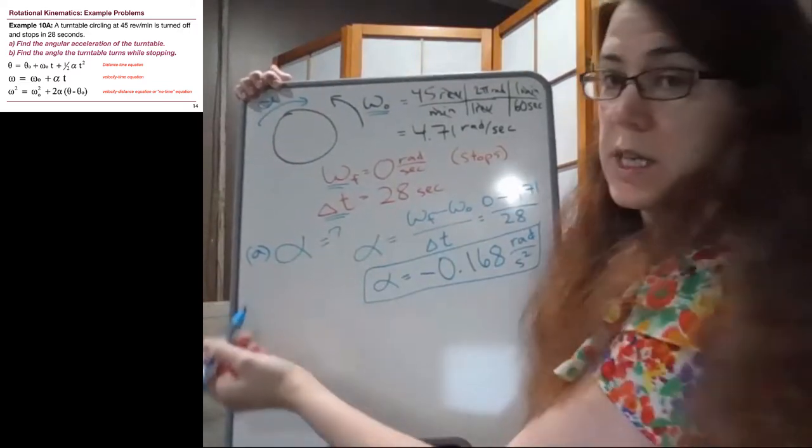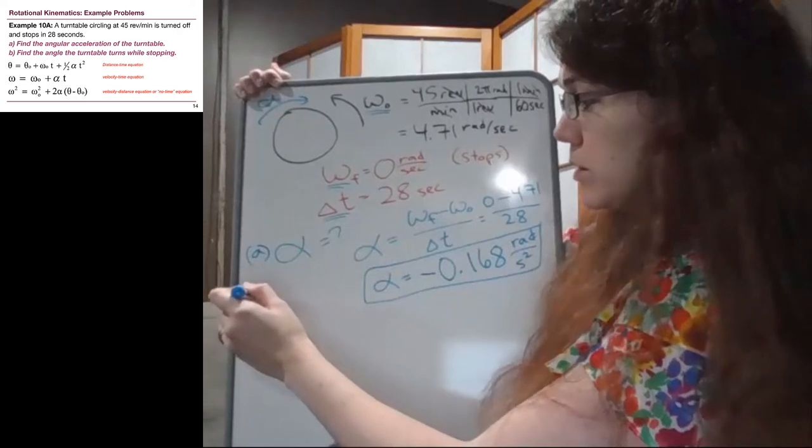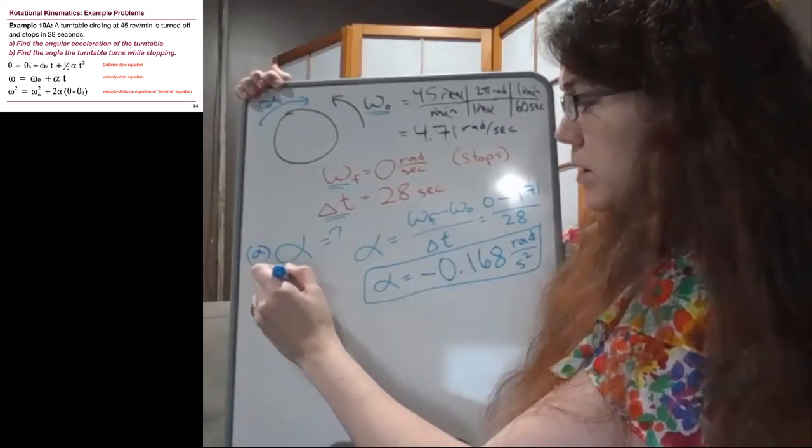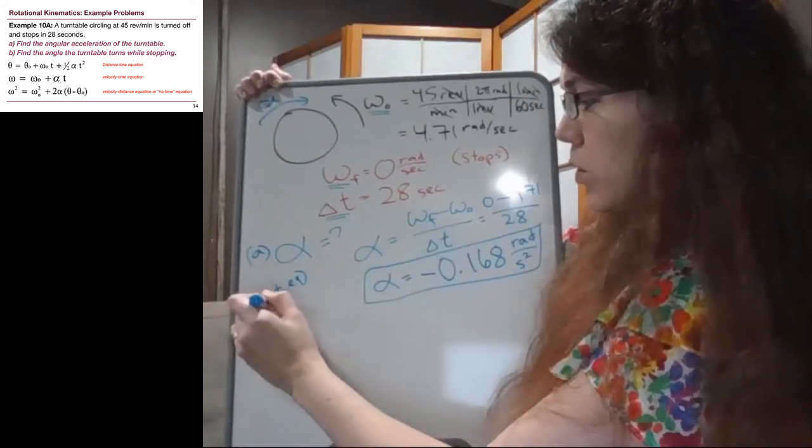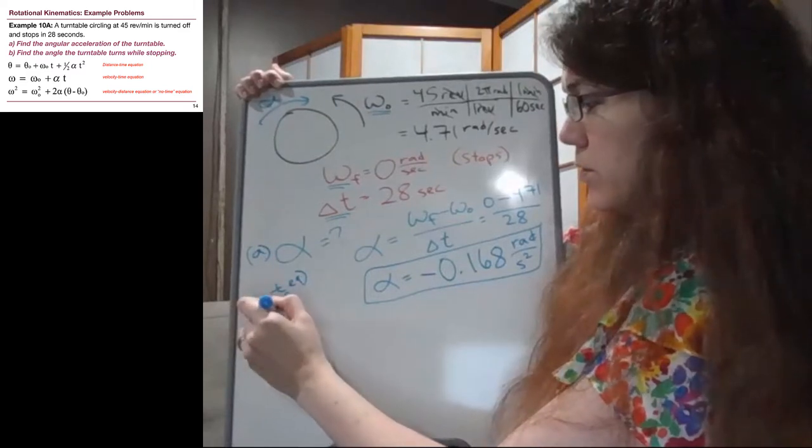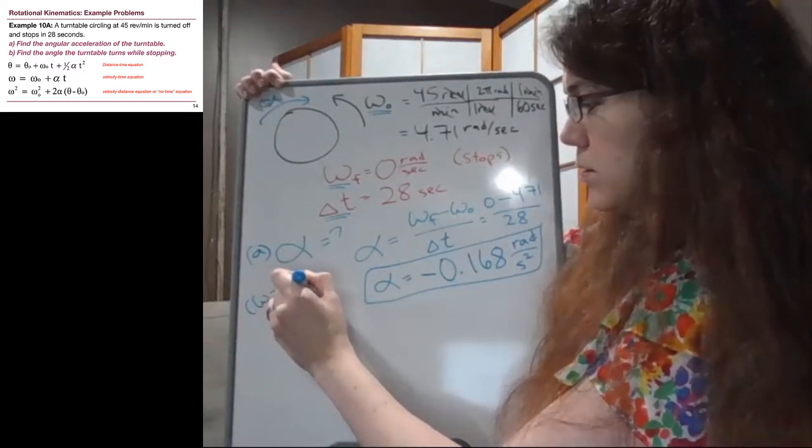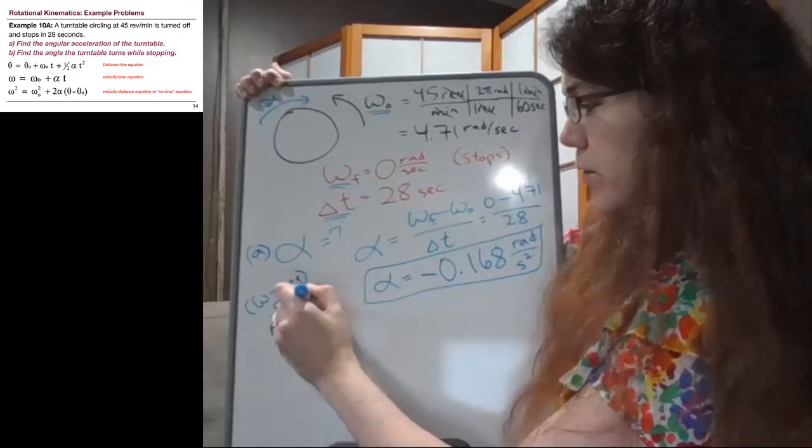And so we get negative 0.168 radians per second squared. So that came from the velocity time equation, so the omega t equation, or the definition of alpha.